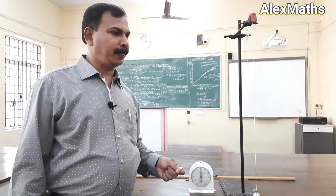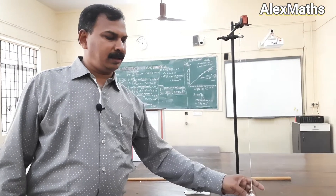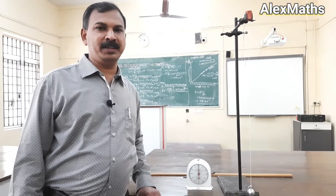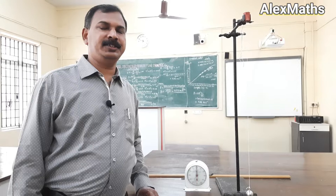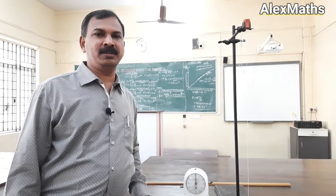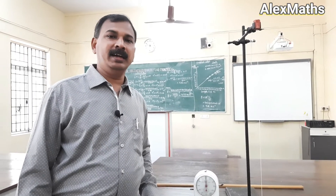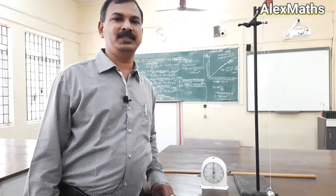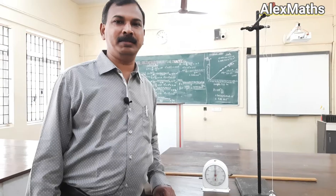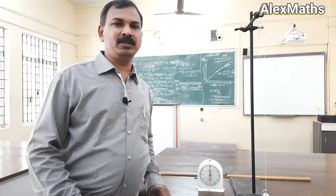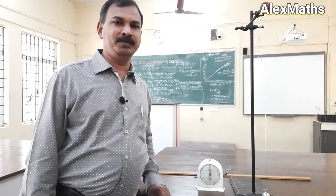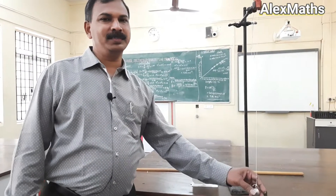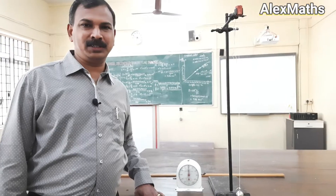We will start with the experiment. The formula for acceleration due to gravity is g = 4π²l / T². That means acceleration due to gravity is directly proportional to the length of the pendulum and inversely proportional to the square of the time period. We also studied that the acceleration due to gravity does not depend upon the mass of the bob or the amplitude of oscillation.